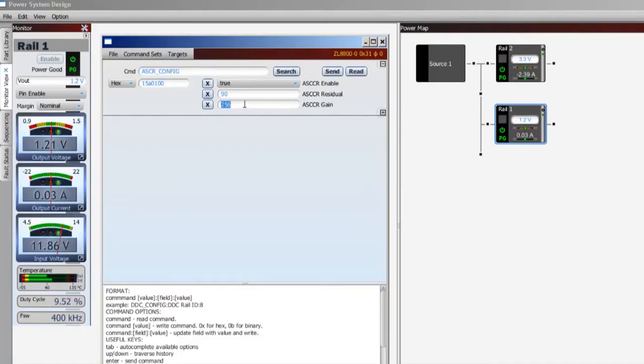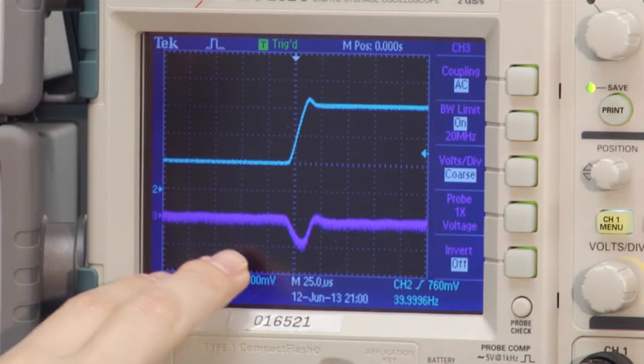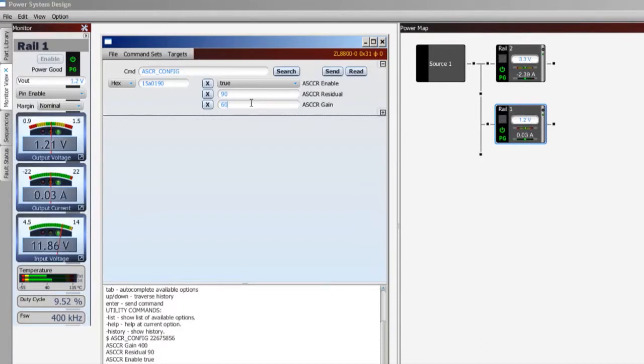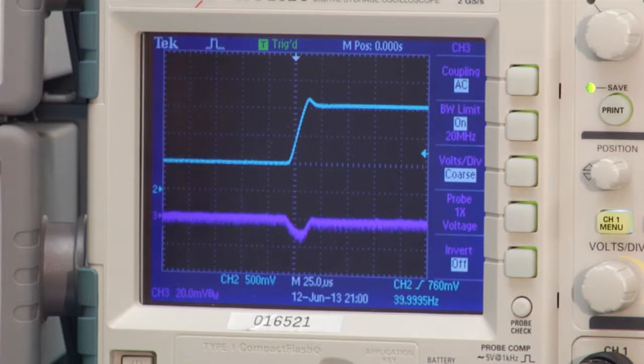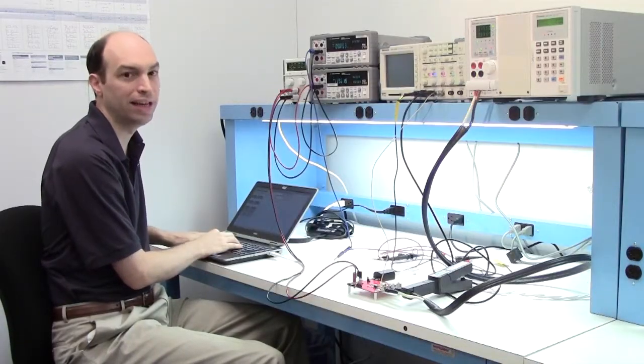I'm going to increase it to 400. As I send the command across PMBus, right away you can see the output voltage deviation drops from about 25 millivolts to under 20 millivolts. On the scope right now, this output voltage waveform is AC coupled and it's about 20 millivolts per division. I can keep increasing it from 400. Now I go up to 600 and it gets even better. Now we're probably about 15 millivolts of deviation for that load transient.